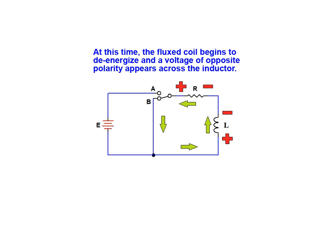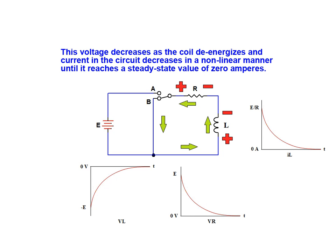At this time the flux coil begins to de-energize and a voltage of opposite polarity appears across the inductor. This voltage decreases as the coil de-energizes and current in the circuit decreases in a nonlinear manner until it reaches a steady state value of zero amperes.